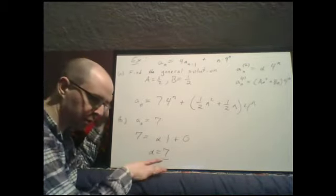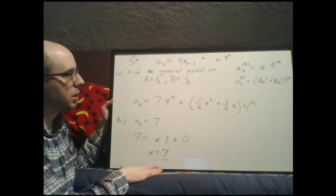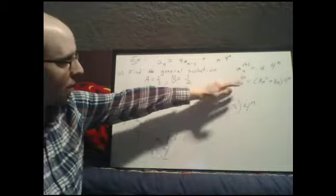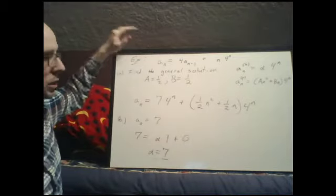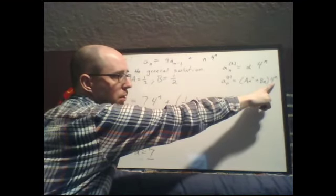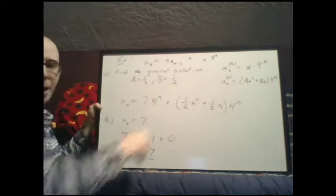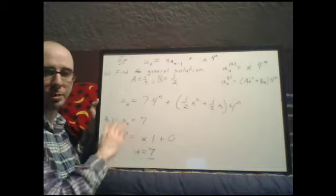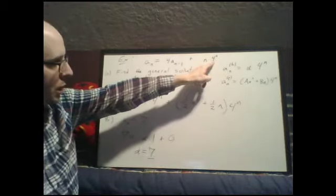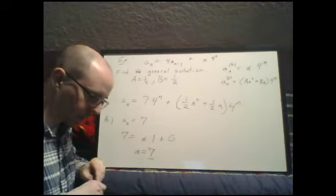This was simpler than expected. The key step for solving for the unknown coefficients is: when you plug a_p(n) into the recurrence, divide out the largest power of the exponential function, and you're left with a polynomial equation to solve. It won't always cancel as cleanly as this one did.